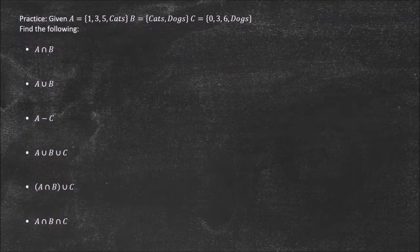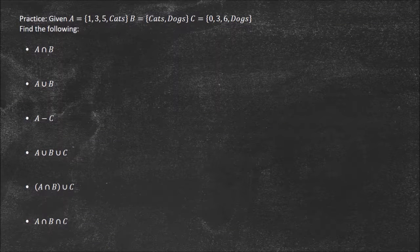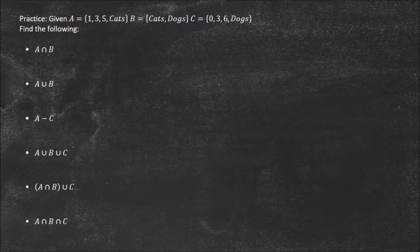Alright, so we're just going to find the following. We have these three sets here. A contains 1, 3, 5, cats. B contains cats, dogs. And C contains 0, 3, 6, and dogs. So we got three sets here. And we just need to find A and B.